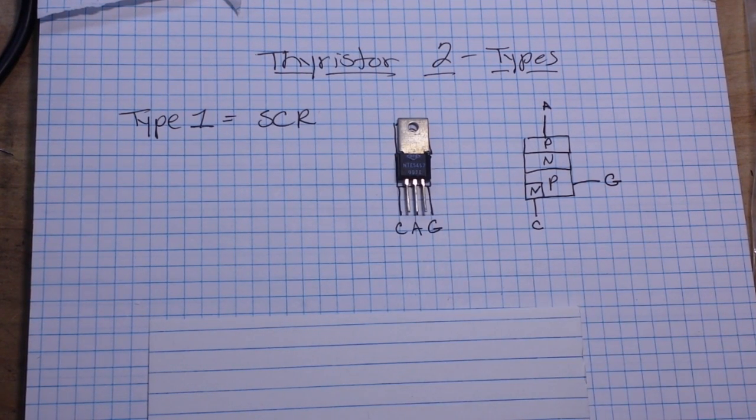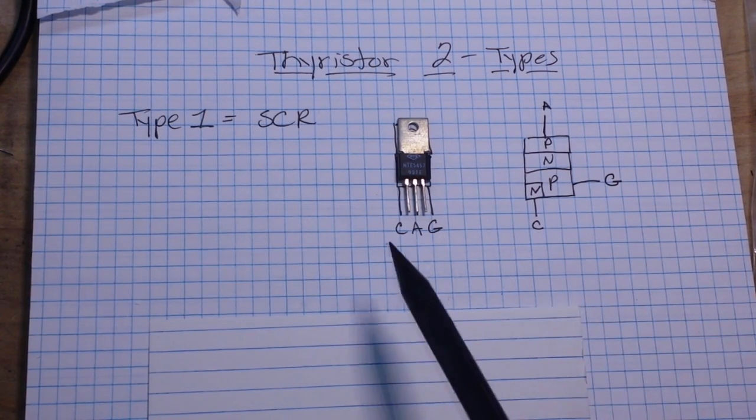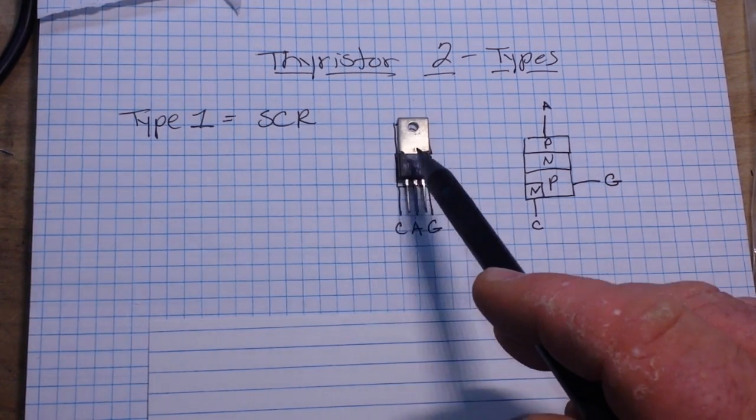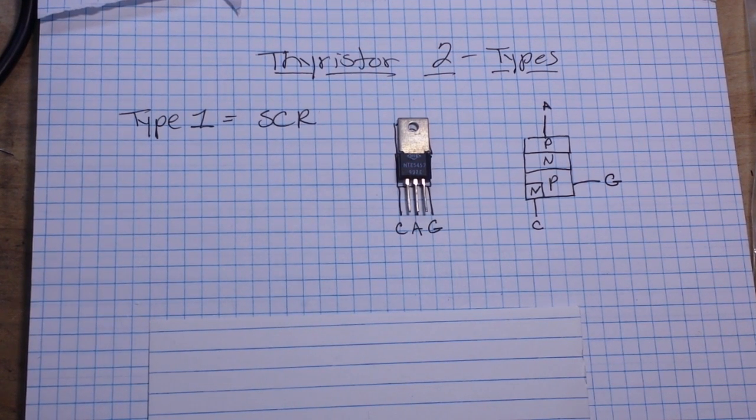There is no amplification here, there is simply on and off. That's it. So you could consider the SCR to be digital, binary, one or zero. There's nothing in between. You can't use this as an amplifier.